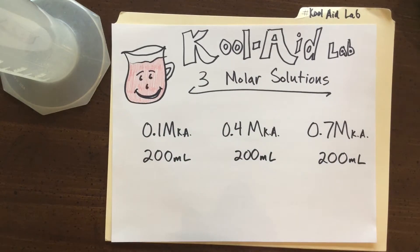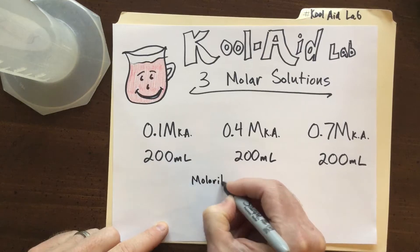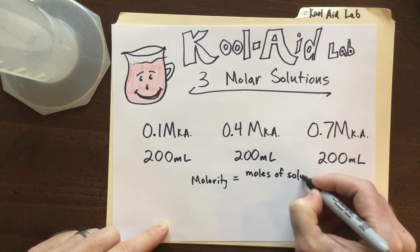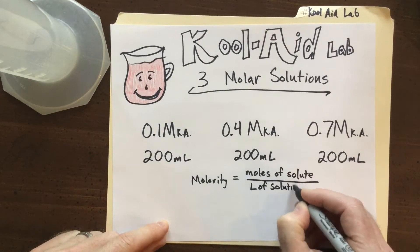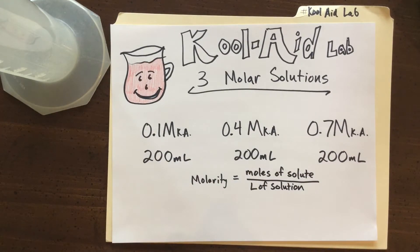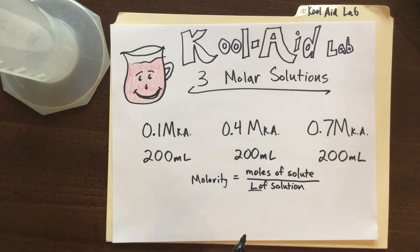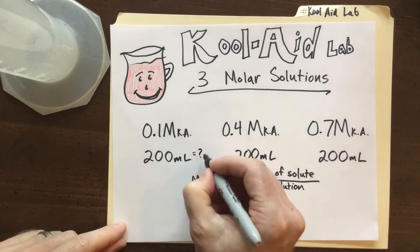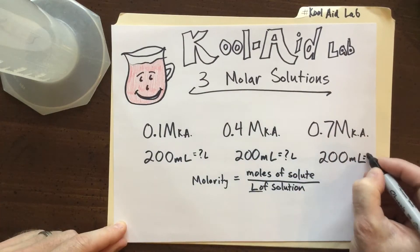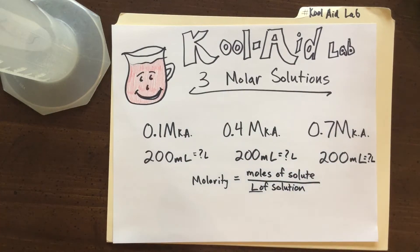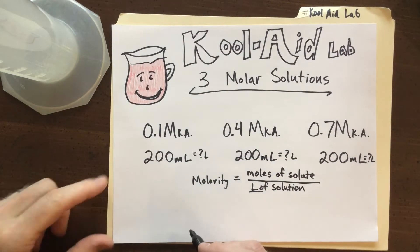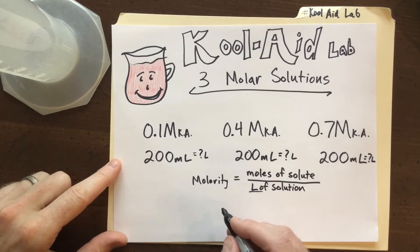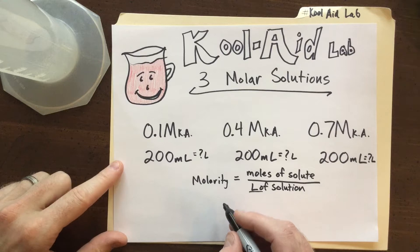Let's take a look at the formula for molarity. It equals the moles of the solute divided by the liters of solution. Now that throws a wrinkle in because we're going to make 200 milliliters, and the formula uses liters. So let's convert all of those milliliters into liters.